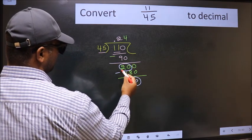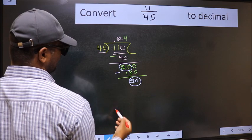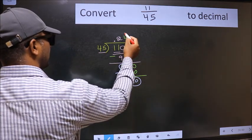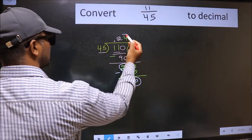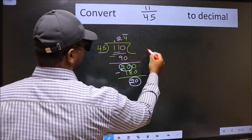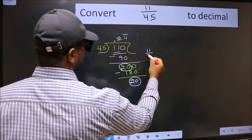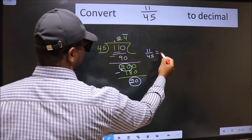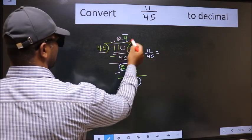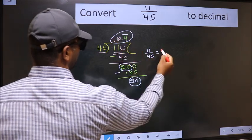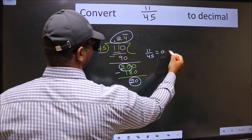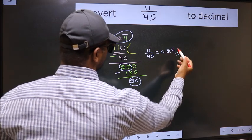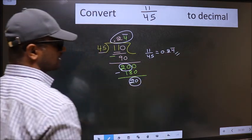Earlier also we got 20. That means we get a bar on this number. Therefore, the decimal of 11 by 45 is 0.24 with a bar on 24. Bar on this number is our answer.